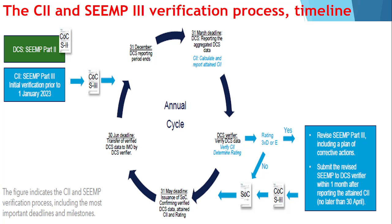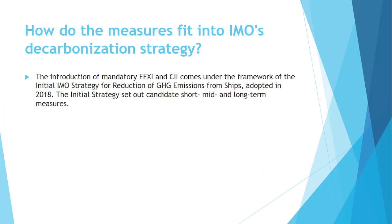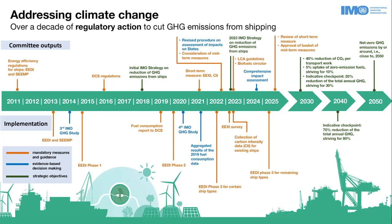This is how the whole process works. The question comes to mind: why is all this — EEDI, CII, SEEMP — coming up? Basically, everything has come up for one reason: addressing climate change. Climate change needs to be addressed so that we can reduce GHG emissions. GHG emissions need to be cut down, and the IMO has made a target for 2030, 2040, and 2050 that by the earliest opportunity this century they want to phase out GHG gases.